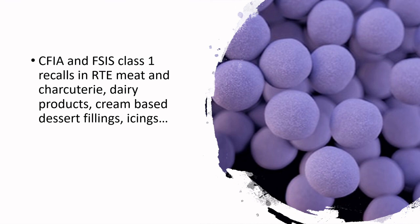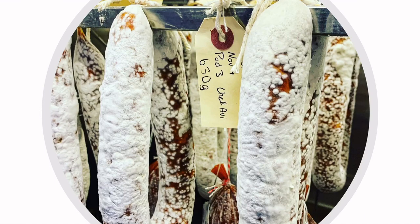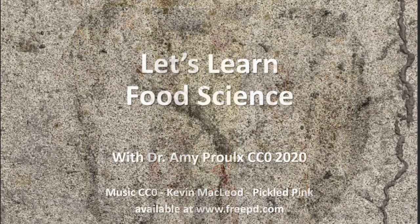CFIA and its American counterparts routinely see Class 1 recalls in ready-to-eat meat, charcuterie, dairy products, cream-based dessert fillings, and icings — because Staph aureus likes to eat protein. I hope you're not deterred from wanting to participate in meat processing. The math is not insurmountable — it really comes down to basic multiplication and addition. Have fun making fermented meat, and we'll talk about more priority pathogens and process controls in the next video.